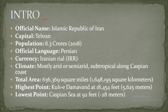The official name is Islamic Republic of Iran. The capital is Tehran and the population is around 8.3 crores as of 2018. The official language is Persian and the currency is the Iranian Rial. The climate is mostly arid or semi-arid, with subtropical conditions along the Caspian coast. The total area is 636,369 square miles.